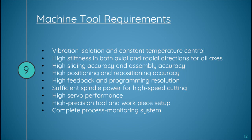A qualified machine tool for diamond turning should possess the following merits: vibration isolation and constant temperature control, high stiffness in both axial and radial directions for all axes, high sliding and assembly accuracy, high positioning and repositioning accuracy, high feedback and programming resolution, sufficient spindle power for high speed cutting, high servo performance, high pressure tool and workpiece setup, and a complete process monitoring system.